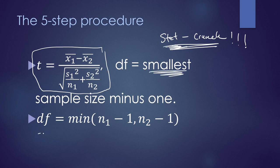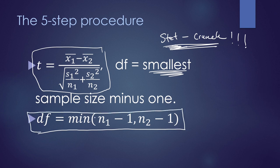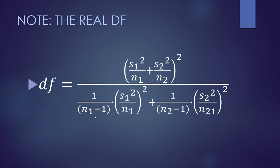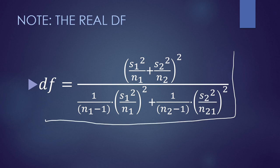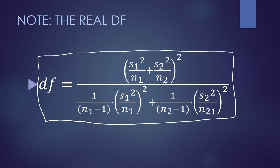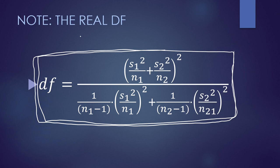The degrees of freedom formula here is actually an approximation. The actual degrees of freedom is a massive, complicated formula. We don't need to use this formula in our class — we're just presenting it in case you want to do the work by hand. We're going to use StatCrunch for everything from now on, so we don't really need to know the formula.